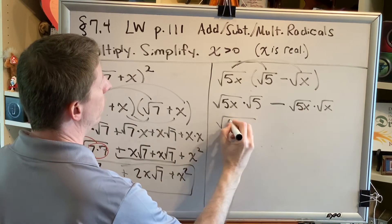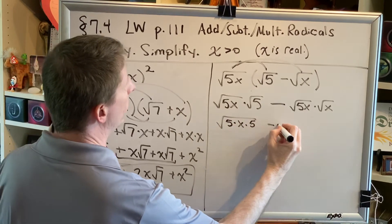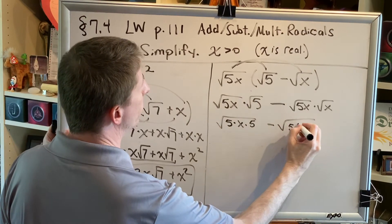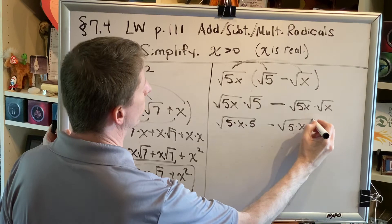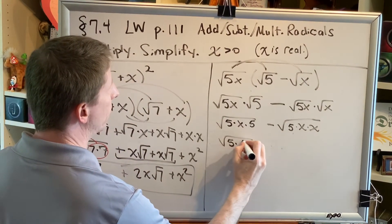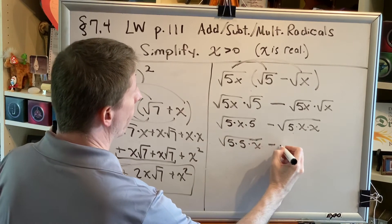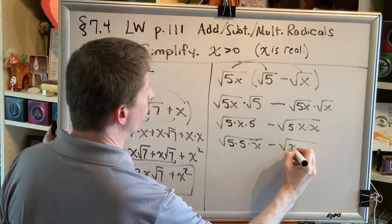This gives me square root of 5 times x times 5 minus square root of 5 times x times x. Multiplication is commutative and can be done in any order, so I can put the 5s together. I can also move these x's to the front.